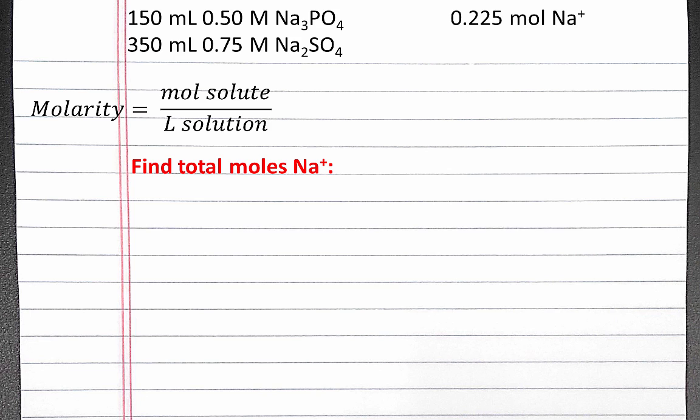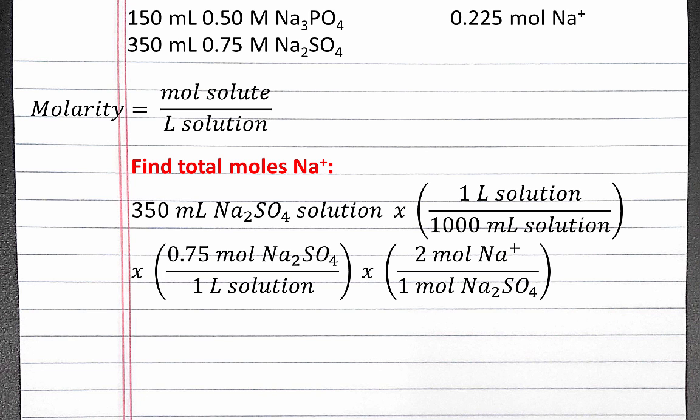Next, we'll calculate the moles of sodium ions from the sodium sulfate solution. We'll do a similar dimensional analysis, starting with 350 milliliters of sodium sulfate solution and converting into moles of sodium ions. When we multiply these numbers out, we'll get 0.525 moles of sodium ions.